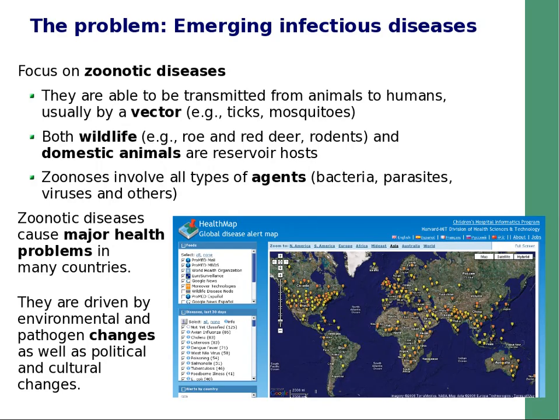These diseases include all types of agents: bacteria, parasites, viruses and others. Being a major health concern, zoonotic diseases are gaining more and more research interest in many countries. The world map shows a snapshot of disease distribution. It is important to know that a variety of factors are causing pathogen spread — environmental, cultural and political changes.